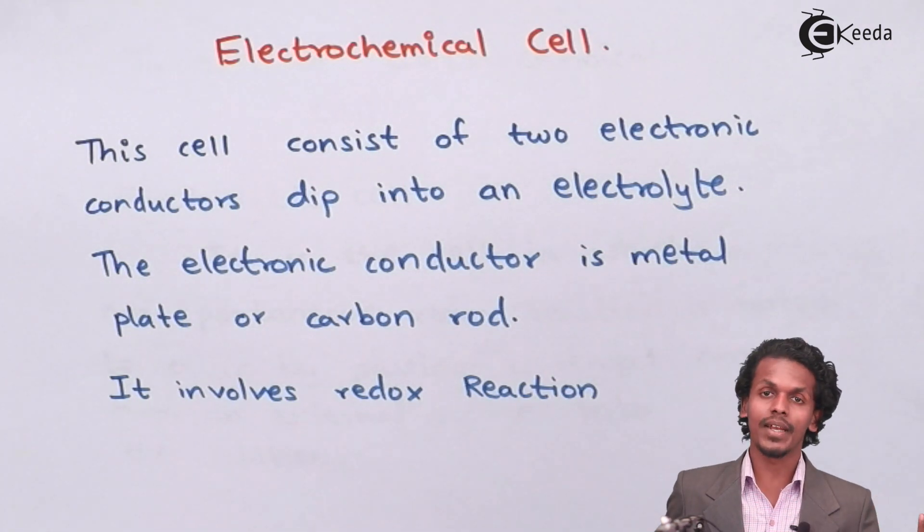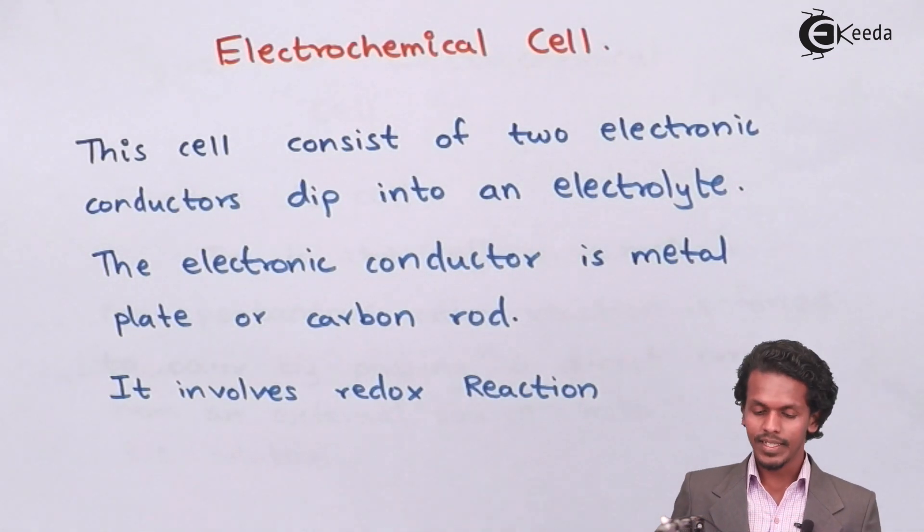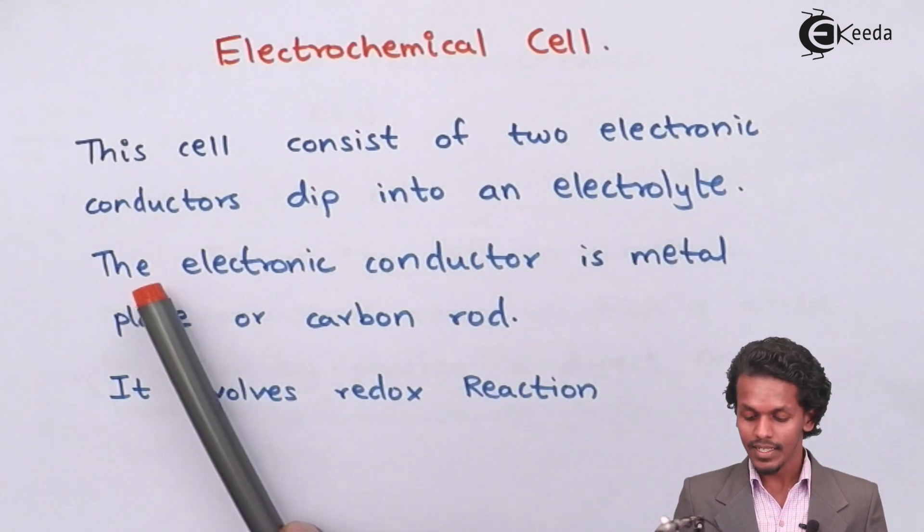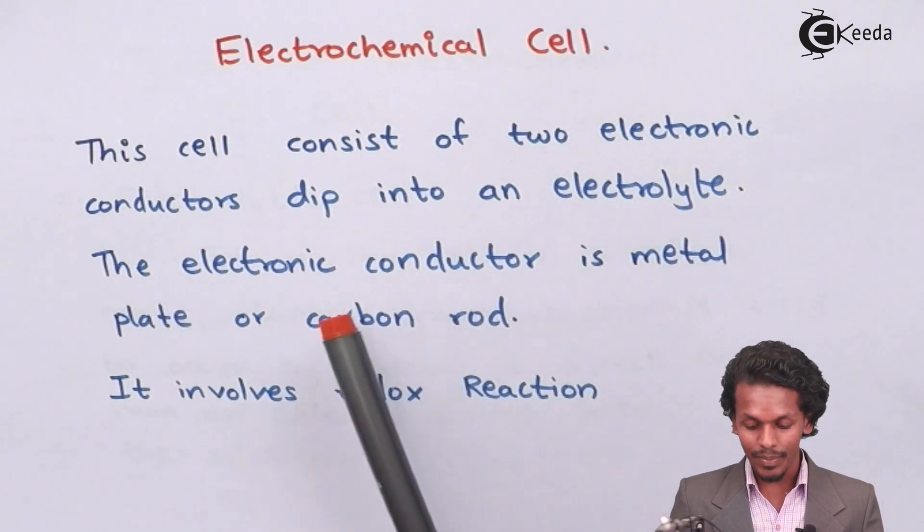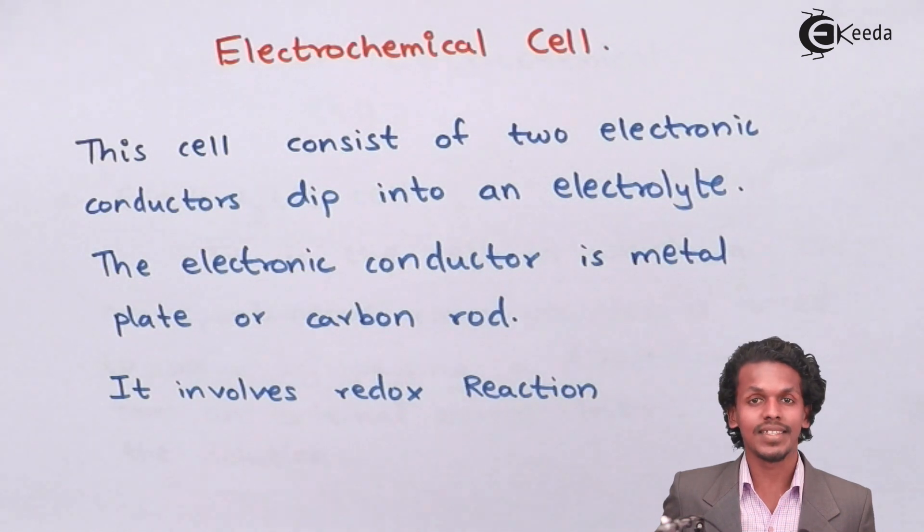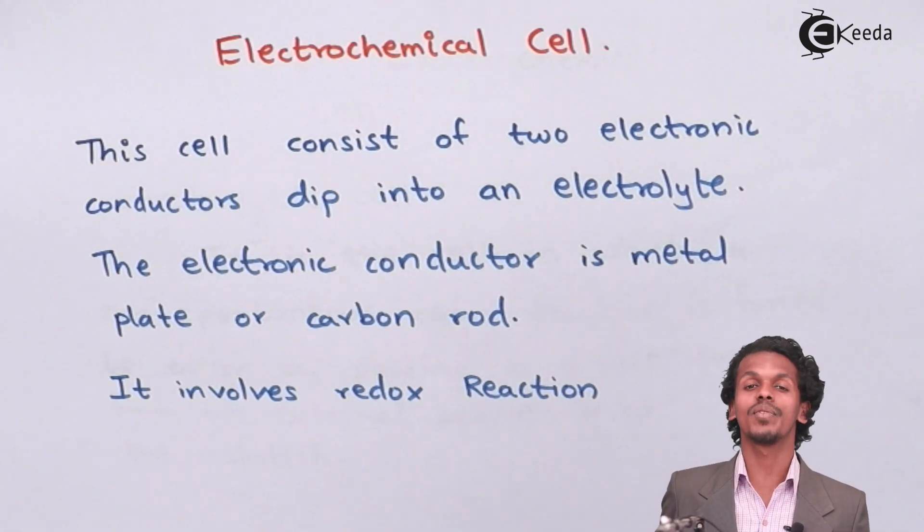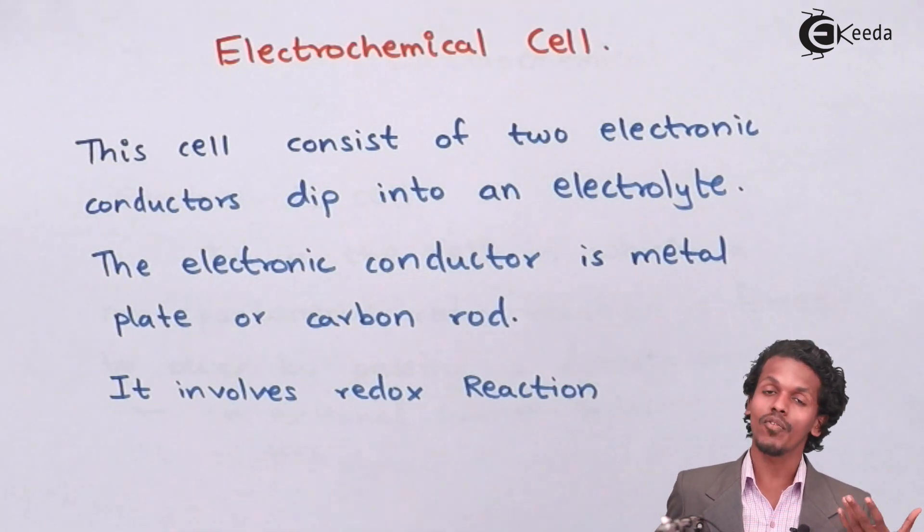And on one there will be a process of oxidation while on the other one there will be a process of reduction that we could observe. The electronic conductors is a metal plate or carbon rod. So the electrodes are made up of the carbon rods or they are of the metal plates or metal rods.